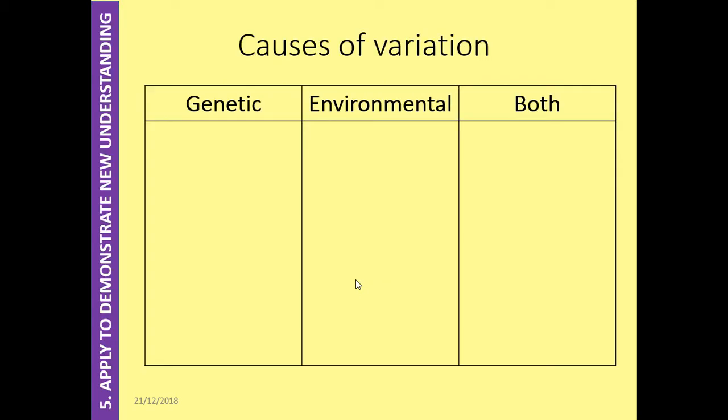Now there are two types of variation: genetic and environmental. Some features can be affected by both your genetics and your environment.